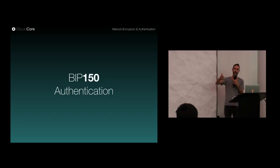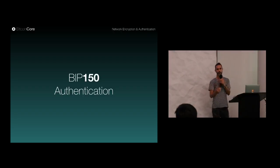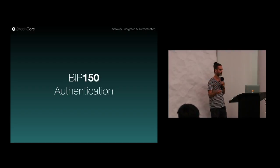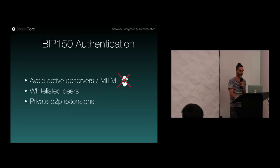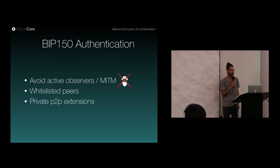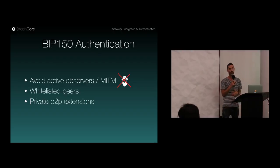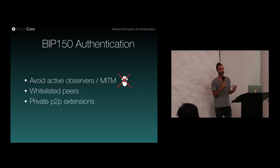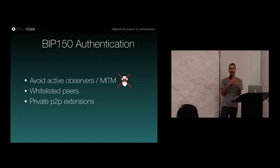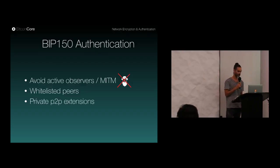Another proposal that was split off from the encryption work is the authentication — BIP 150 — which means making sure you are connected to the right peer. It avoids the active man-in-the-middle situation. It's useful for whitelisting peers, like Fiber-type connections, and it would allow private peer-to-peer extensions. For example, a peer could serve fee estimations to a certain set of authenticated peers.